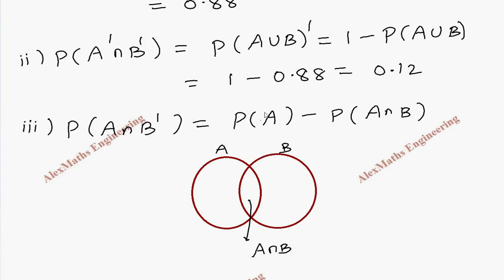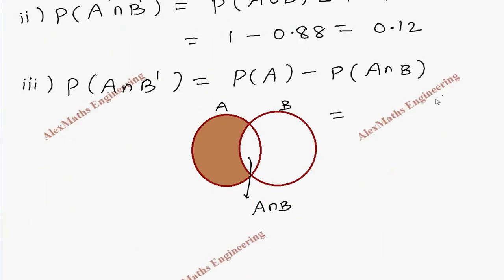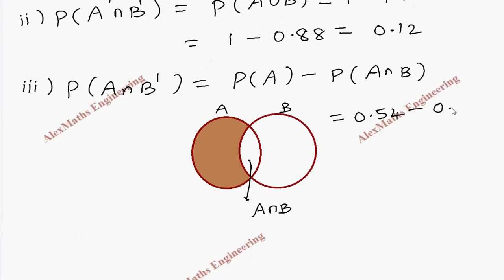When you need A intersection B dash, it means it is only A, this part. So from the A, if I remove this common part, we get A intersection B dash. So I apply the formula for P of A, which is given in the question as 0.54. So we substitute here 0.54 minus 0.35. Then after subtraction we get 0.19.